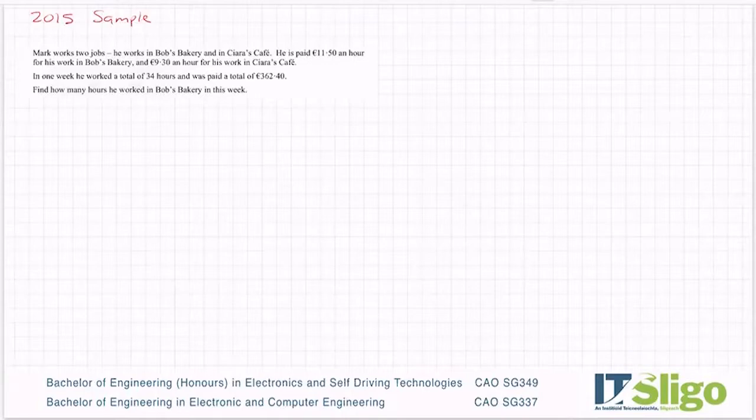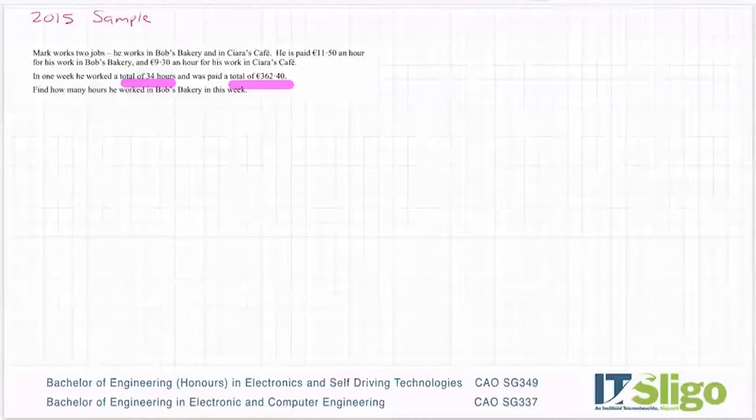In one week, he worked a total of 34 hours and he was paid a total of €362.40. Find how many hours he worked in Bob's Bakery in this week.